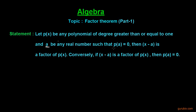is equal to 0 — this means p(a) is equal to 0 — then (x minus a), which is the divisor, is a factor of p(x), the dividend. Conversely, if (x minus a) is a factor of p(x), then the remainder will be equal to 0, meaning p(a) will be equal to 0.